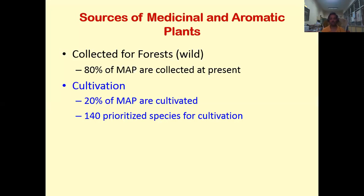Regarding sources of medicinal and aromatic plants, they come from two sources. Currently, 80% of medicinal aromatic plants are collected from the forest, while 20% are sourced from cultivation. There are around 100 prioritized species of medicinal plants recommended for cultivation in our country.